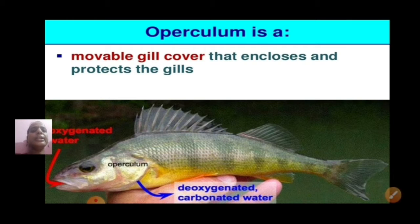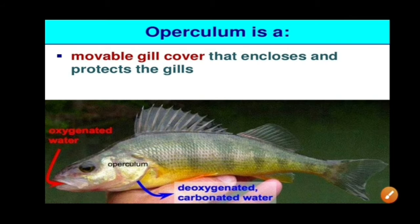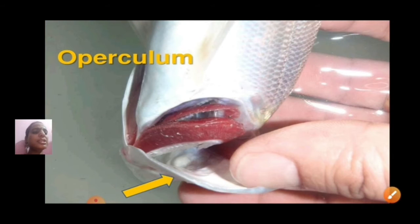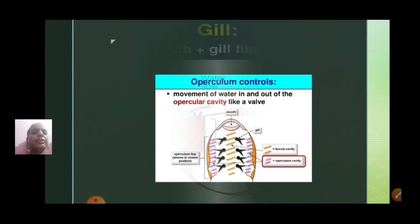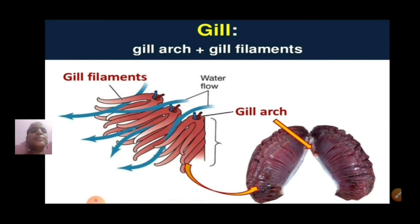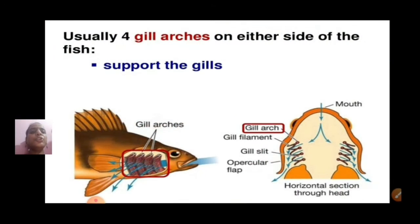What is the operculum? It is a movable gill cover that encloses and protects the gills. Just over the gill there is a cover known as the operculum, which can move. What does the operculum do? It controls the movement of water in and out of the opercular cavity like a valve. Gill arch plus gill filaments makes the gills. Usually four gill arches are present on either side of the fish, and these gill arches support the gills.